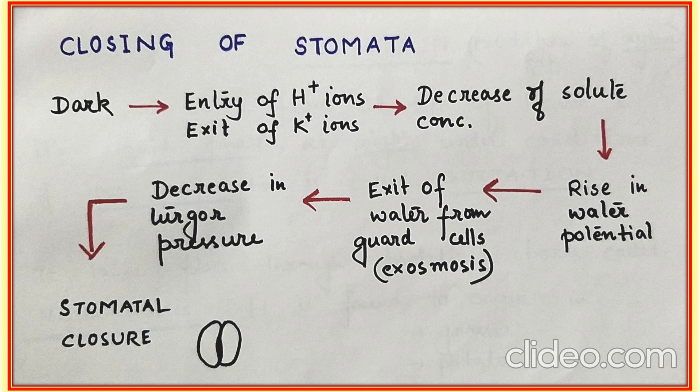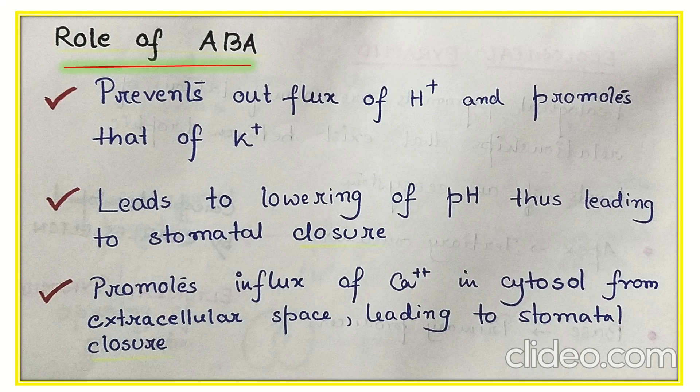We'll talk about three very important points about the role of ABA, or abscisic acid, in stomatal closure. What does it do? It prevents the outflux of hydrogen ions and promotes that of potassium. It leads to the lowering of pH, thus leading to stomatal closure. Finally, it also promotes the influx of calcium into the cytosol from extracellular space, leading to stomatal closure.